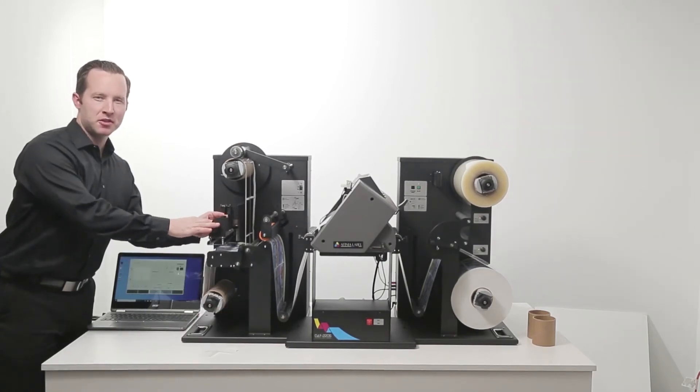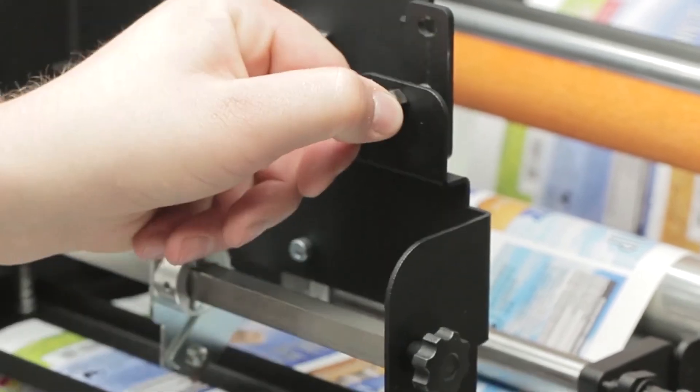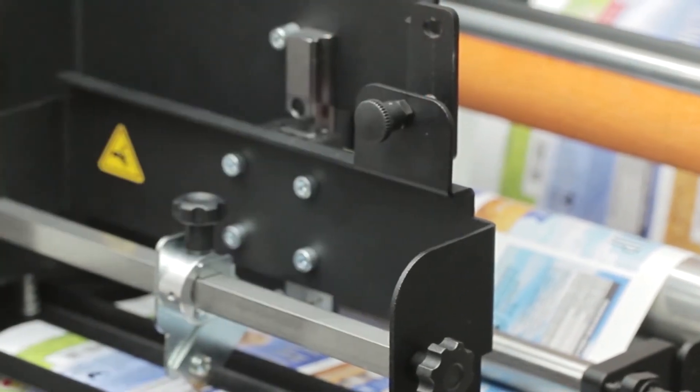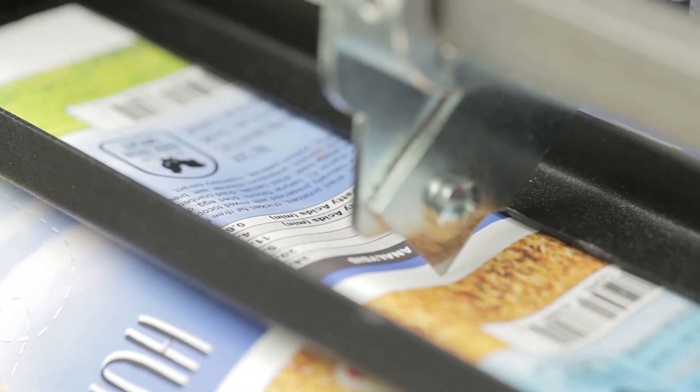For the final step, let's adjust the slitter. Simply lower it to the setting position, adjust the slitter, then lower it to the cutting position.